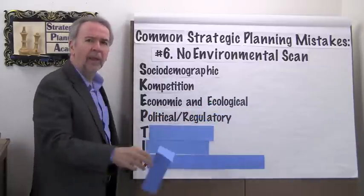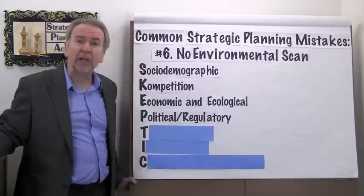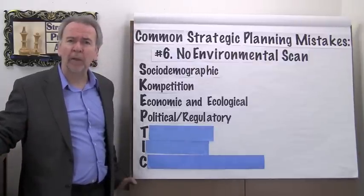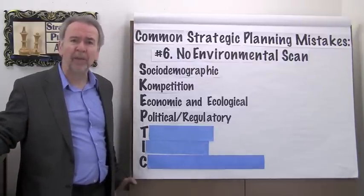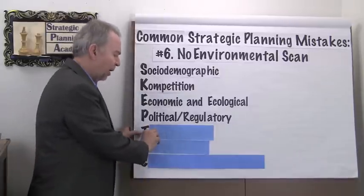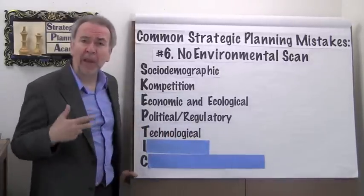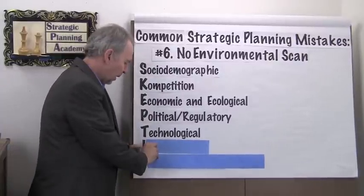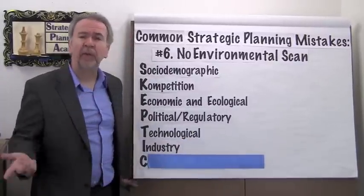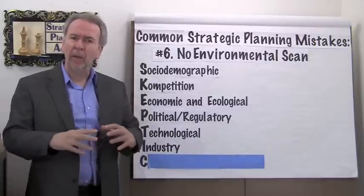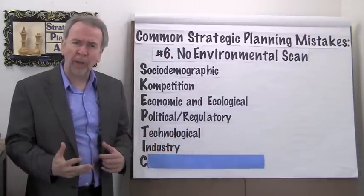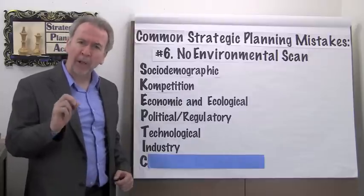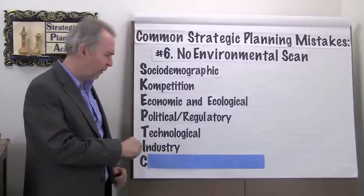The P stands for political regulatory — what's coming down the pike in the form of new laws or restrictions that might affect you? The T stands for technological, the major driver of change in most industries. The I stands for industry structure. Are there a lot of big players? Are there a lot of small players? What are the barriers to entry? If you look at the Michael Porter stuff, it fits in very nicely.